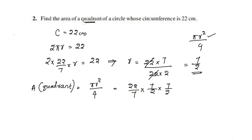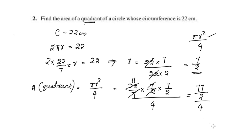Divided by 4. What does 7 and 7 cancel? 2 and 22 cancel. 11 into 7 is 77 by 2, divided by 4. That is 77 by 2 multiplied by the reciprocal 1 by 4, equals 77 by 8. So the answer is 77 by 8 centimeters squared.